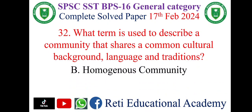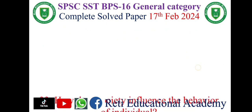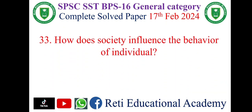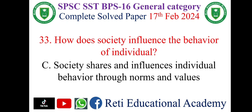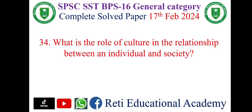...B — homogenous community. Question number 33: How does society influence the behavior of individuals? The correct answer is C — society shapes and influences individuals' behavior through norms and values.